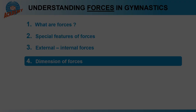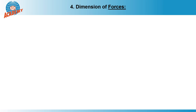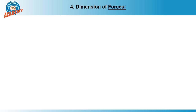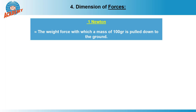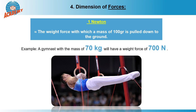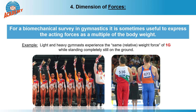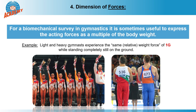Now that we have a certain idea of force effects in gymnastics, I would like to explain in which units forces are usually measured. Forces are measured in honor of the natural scientist Isaac Newton — in Newtons. To give you a rough idea, one Newton is roughly the weight force with which a mass of 100 grams is pulled to the ground. For example, a gymnast with a mass of 70 kilograms will have a weight force of 700 Newtons. In many biomechanical studies, it is very useful to compare the acting forces as a multiple of the body weight. With this approach, the light female gymnasts and the somewhat heavier men have the same relative weight force of 1g when standing completely still on the ground.